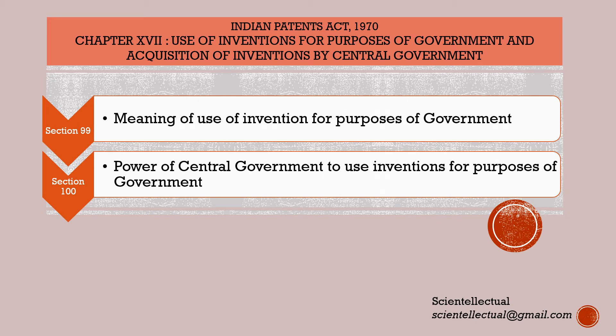Hello everyone. Welcome to the channel ScientElectual. In this video, we are covering two sections, Section 99 and Section 100, two very important sections under Indian Patents Act 1970. These sections come under Chapter 17: Use of Inventions for Purposes of Government and Acquisition of Inventions by Central Government.